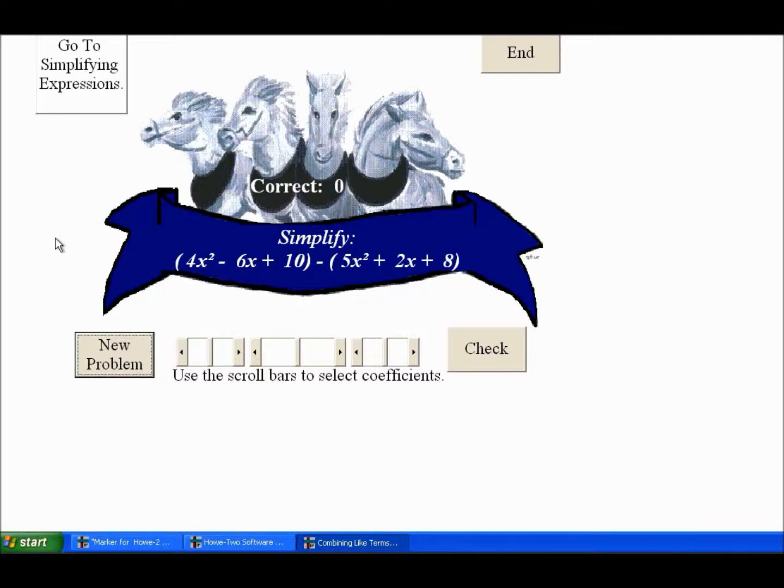It's pretty straightforward. You have to gather the x squareds together, the x terms and the constants. In this case where we get the minus in between, you have to distribute the negative 1 to everything in here.